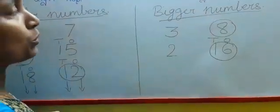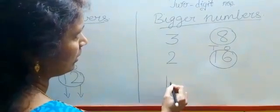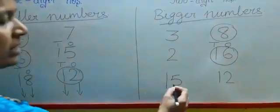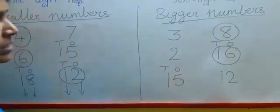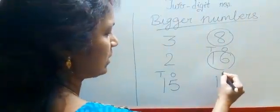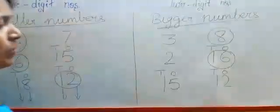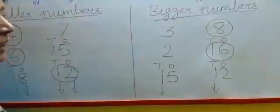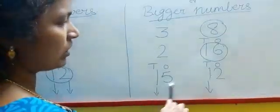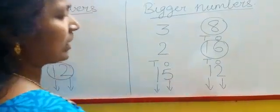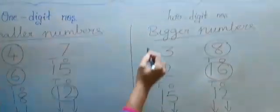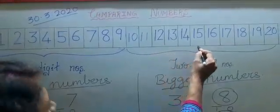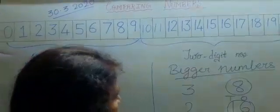Now we will compare two two-digit numbers: 15 and 12. Both are two-digit numbers. In 15, 5 is in the one's place and 1 is in the ten's place. In 12, 2 is in the one's place and 1 is in the ten's place. First, we compare the ten's place: here is 1, and here is also 1 — both are the same. Now we compare the one's place: here is 5, here is 2. So 5 is the bigger digit, and 15 is the bigger number. See 15 on the number line — 12 is here, and 15 is further away from 0, so 15 is the bigger number.